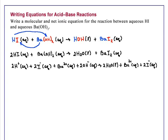So this is the ionic equation, and we will cancel all species that occur on both sides of the equation. So we have two iodide, and we have barium, and we can cancel.